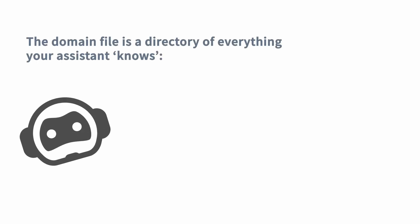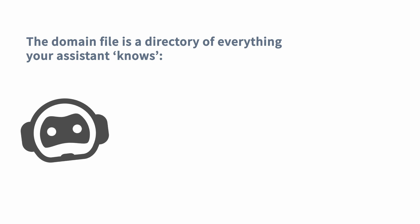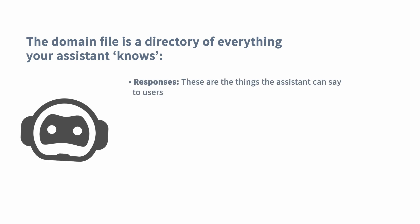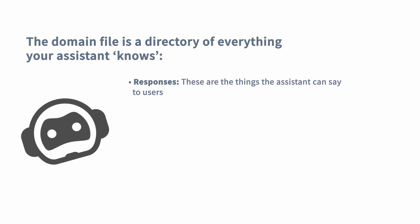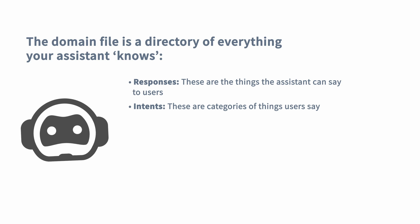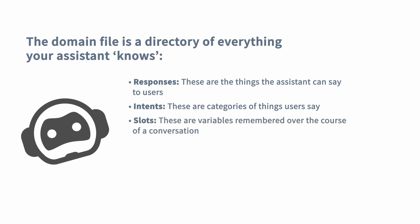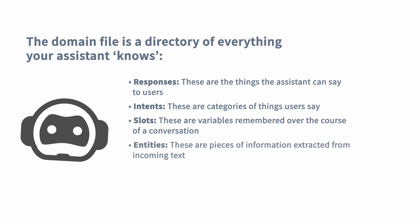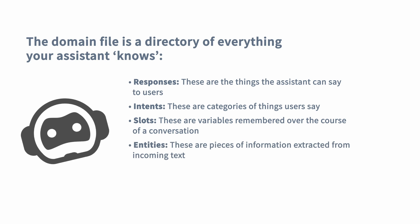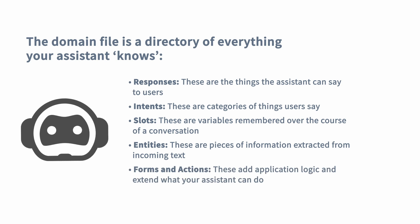You can think of this domain file as a directory of everything that your assistant knows. This includes responses — things that your assistant will say to users — intents, which are categories of things your users can say that might warrant a response, slots, variables stored over the course of the conversation, entities, pieces of information extracted from the raw user input text, and forms and actions, which are ways to extend what your assistant can do and add additional logic.